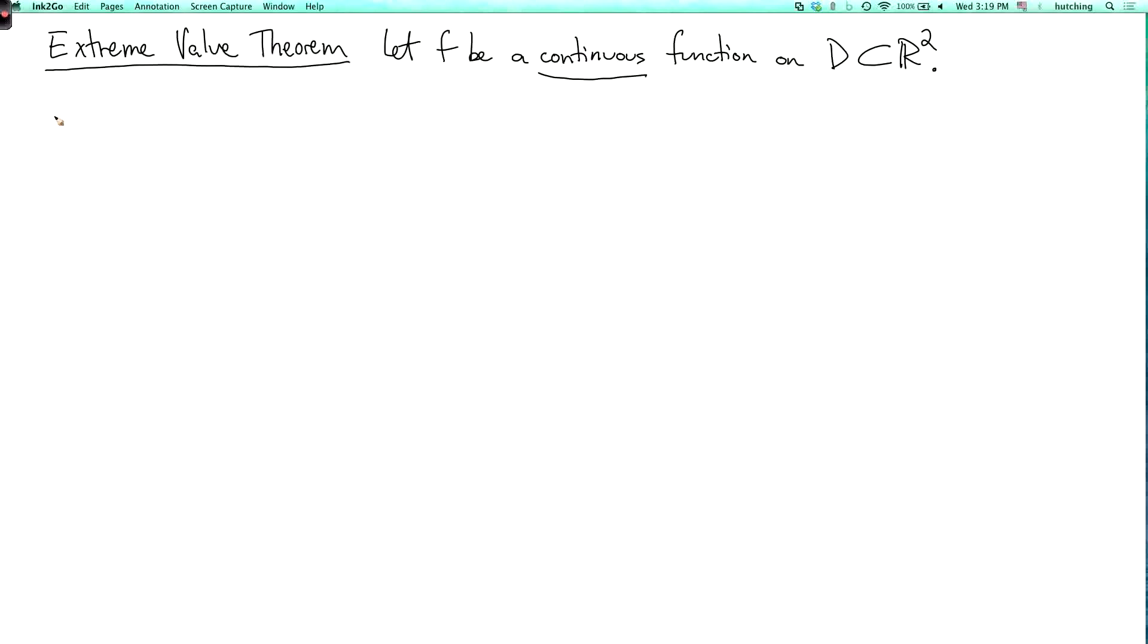So what we need to assume is that D is closed and bounded. I'll tell you in a minute what those terms mean. So then f has a global minimum and a global maximum on D.